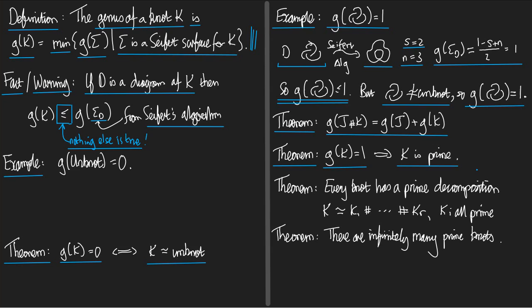Remember, a prime knot is one that's not the unknot, and it's not the sum of two knots which are themselves not the unknot. Okay, so if the genus is one then k is prime. And that's not too hard to see, the proof's in the notes, you should definitely study it. Another theorem: every knot has a prime decomposition. In other words, if you take a knot k, then you can write it as a sum of something prime summed with blah blah blah summed with something prime.